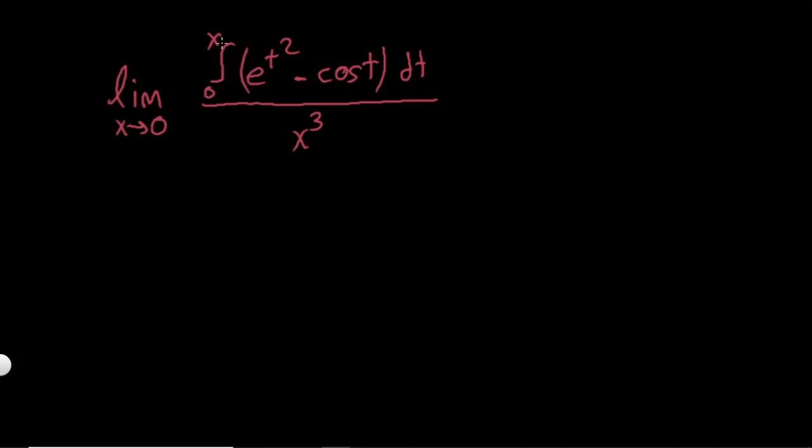Here if I put x is equal to 0 on this integral, it's going to be the integral from 0 to 0. So no matter what the function is, it's going to be 0 over 0. So we have a 0 over 0 case.